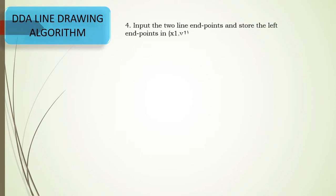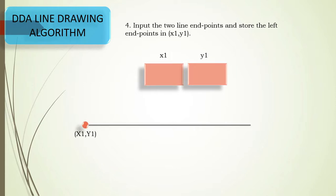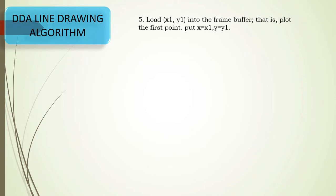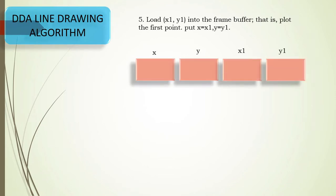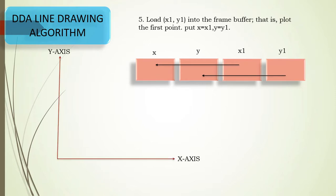Next, we take input of the two line endpoints and store the left endpoint as x1 and y1. We plot x1, y1 as the starting end of the line, then trace the line by calculating subsequent points up to x2, y2, which is the second point. We load x1 into x and y1 into y as the initial values and plot this as the first point of the line.